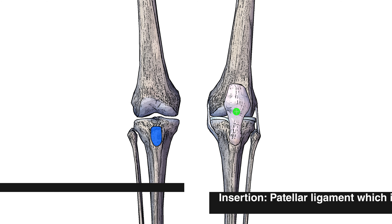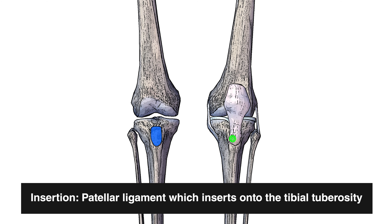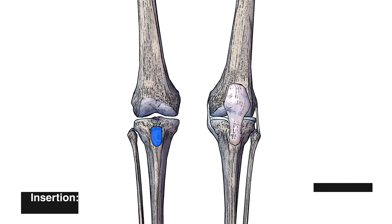This patella ligament then comes down and inserts onto the tibial tuberosity, which you can see I've marked out on the tibia in blue.